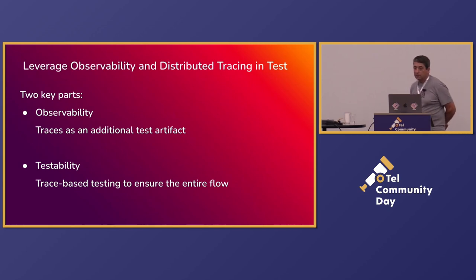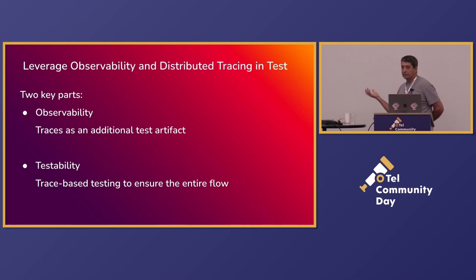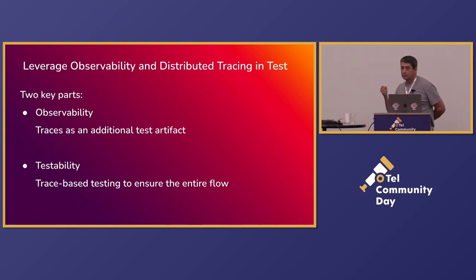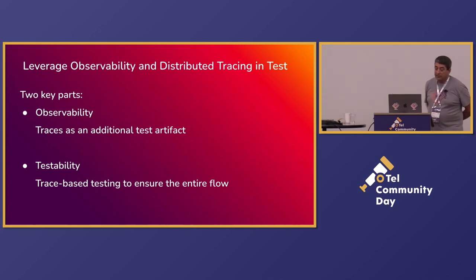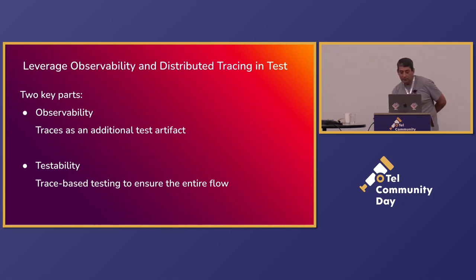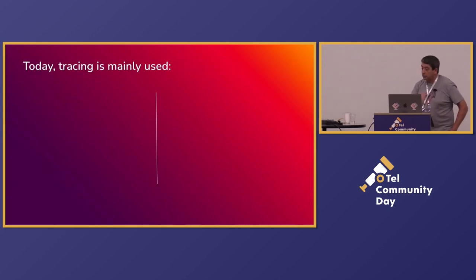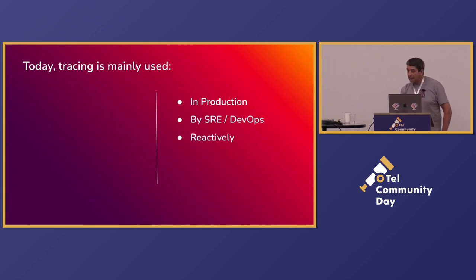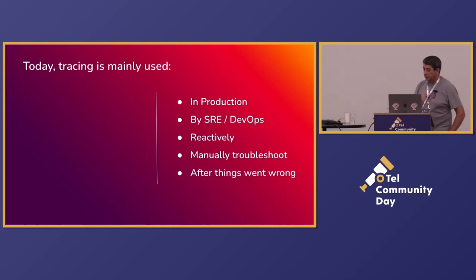I'm defining test observability as having two parts. First is being able to see a trace with every test — so if you run a test, an artifact that should be readily available is the trace for that test, so you've got more data to look at. The second part is testability: leveraging the trace to enable you to create tests against the trace with a technique known as trace-based testing. Today, tracing is mainly used in production by SREs and DevOps reactively to manually troubleshoot after things go wrong.